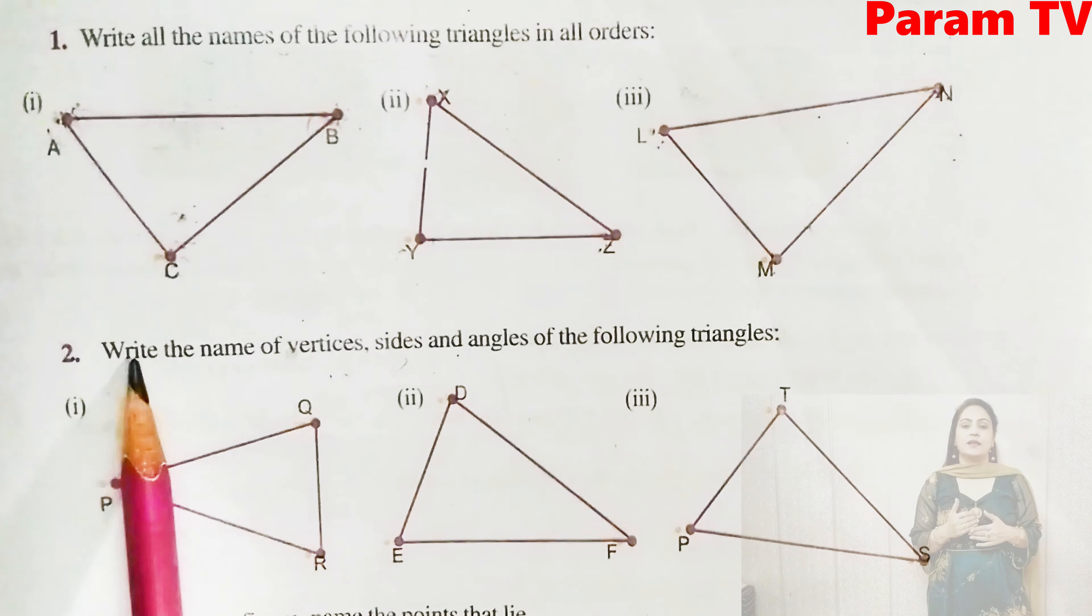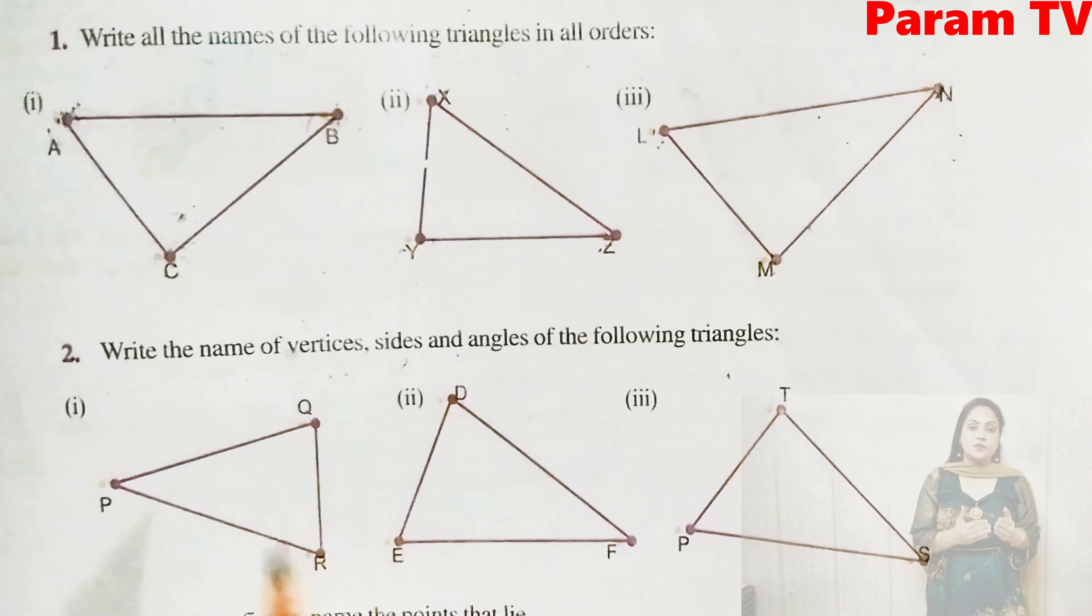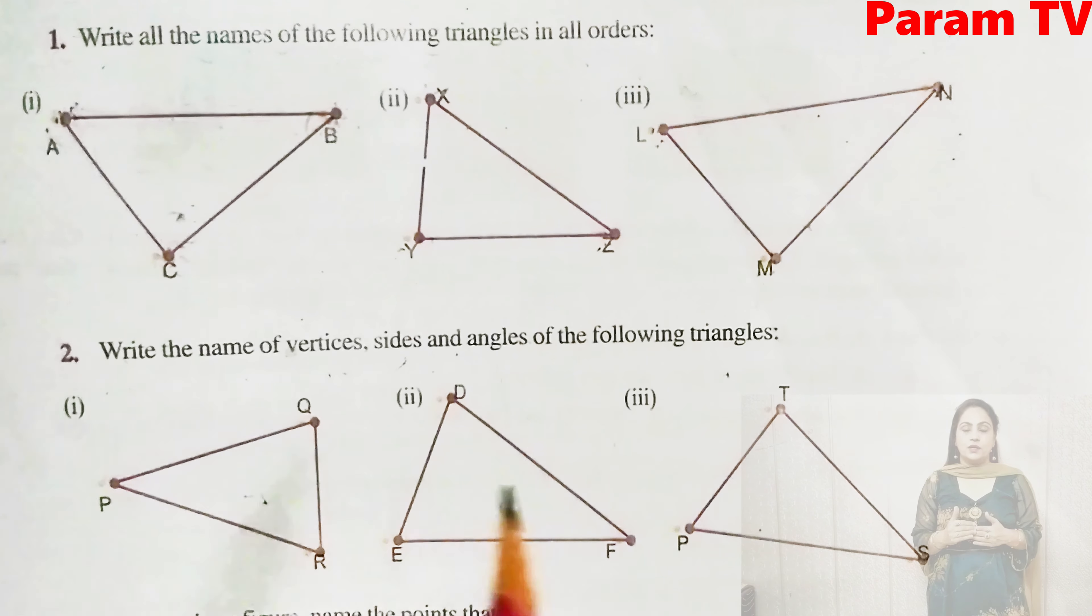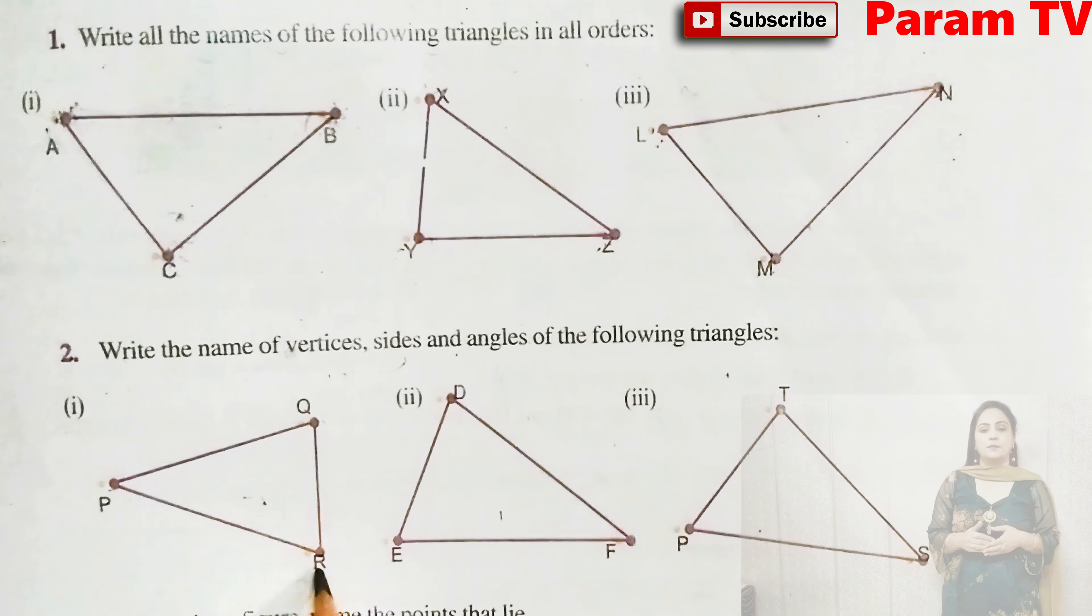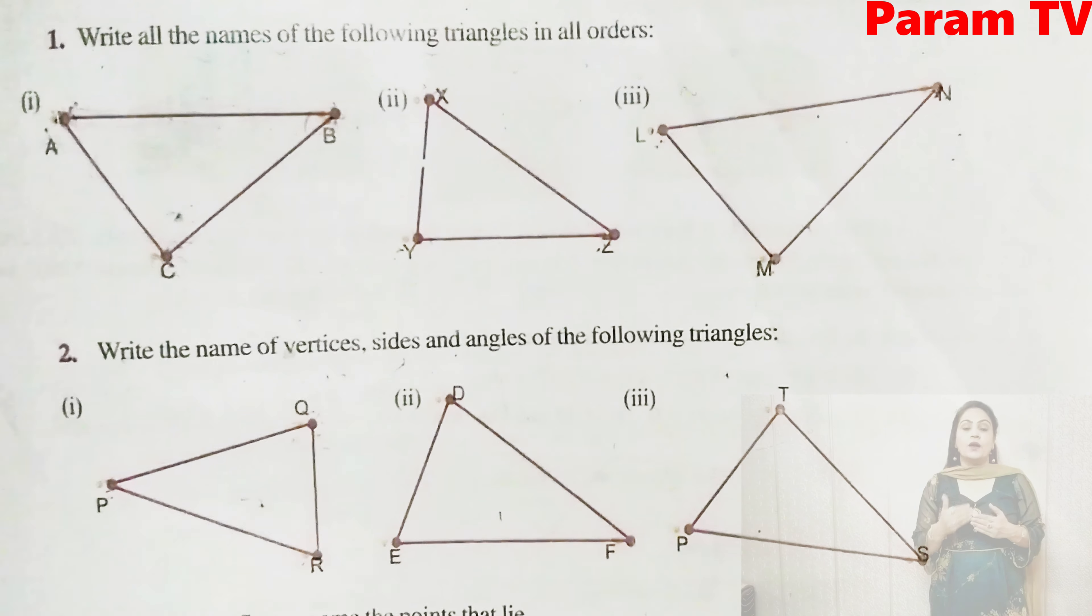Question number two is, write the name of vertices, sides and angles of the following triangles. You have to write their vertices, sides names, and angles names. So first see, vertices will be P, Q, R. Sides will be PQ, QR, RP. And angles, you can write angle P, angle Q, angle R.